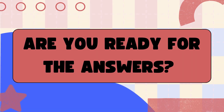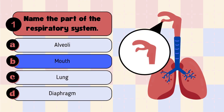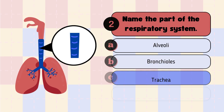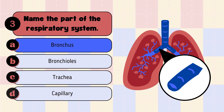Are you ready for the answers? Let's look at the answers. The answer to number 1 is option B, the mouth — the part highlighted in the circle is the mouth. The answer to question 2 is option C, the trachea — the part highlighted in the circle is the trachea or windpipe. The answer to question 3 is option A, the bronchus — the bronchus is the part that leads into the lungs.